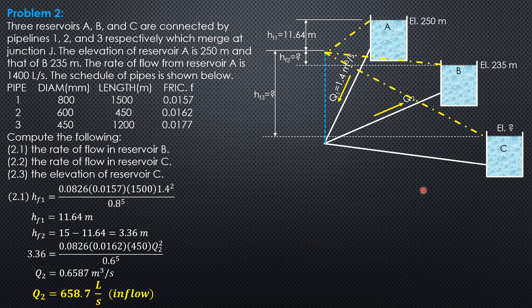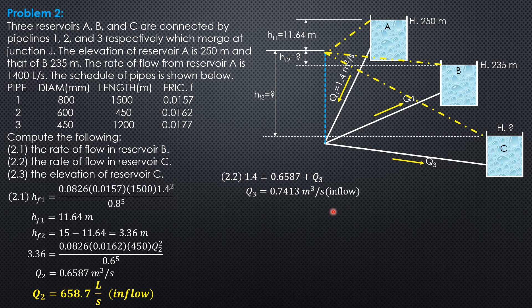For the elevation of reservoir C, we need to compute HF3 now that Q2 is found. The continuity relation is: 1.4 equals Q2 plus Q3. So 1.4 equals 0.6587 plus Q3, giving Q3 equal to 0.7413 cubic meters per second.